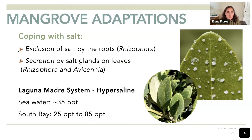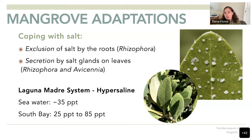One is exclusion — by preventing the roots from absorbing salt through water — mostly found in Rhizophora mangroves. The other is secretion — secreting the salt through salt glands in the leaves.